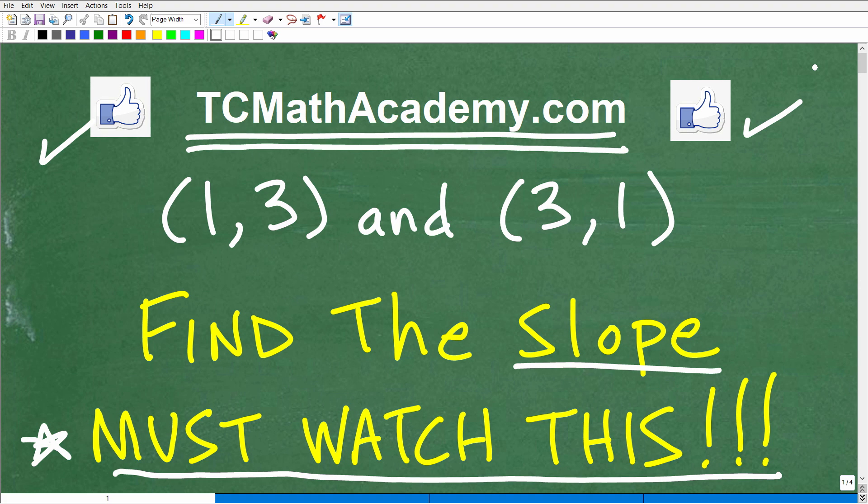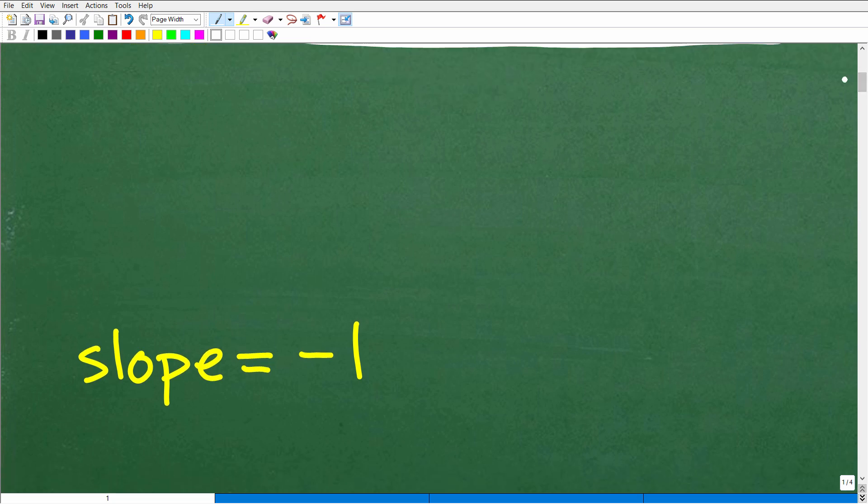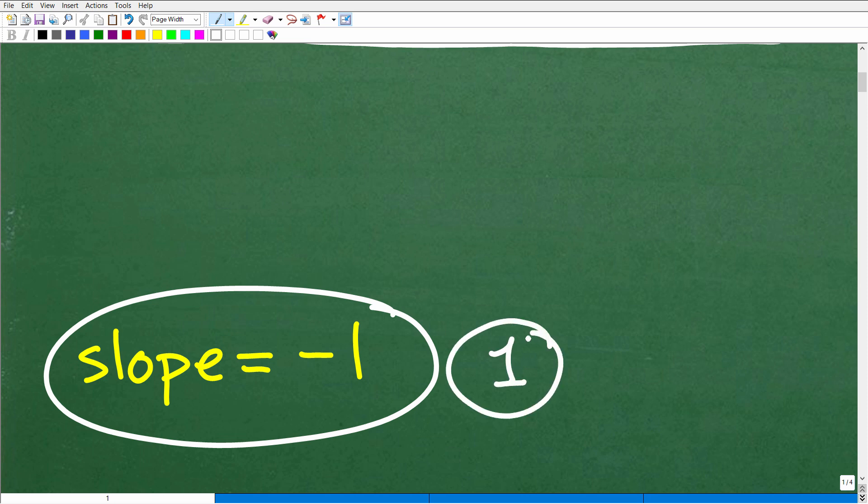Okay, so let's go ahead and take a look at the right answer here. And the slope between these two points is negative one. Now, if some of you got an answer of one, positive one, well, you likely made the error that I am talking about.